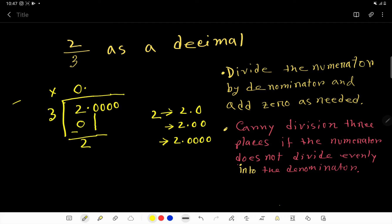Now, you have to bring down the 0. Now, you have to determine how many times 3 goes into 20.